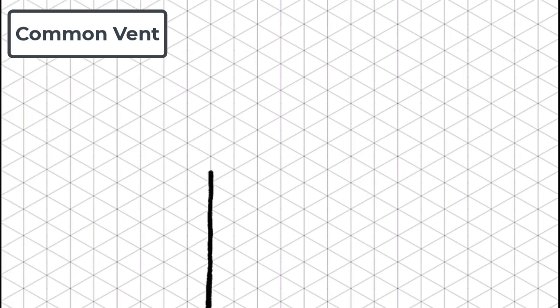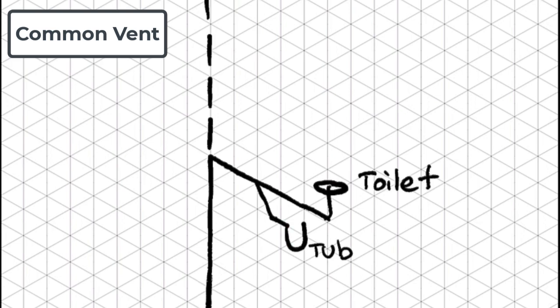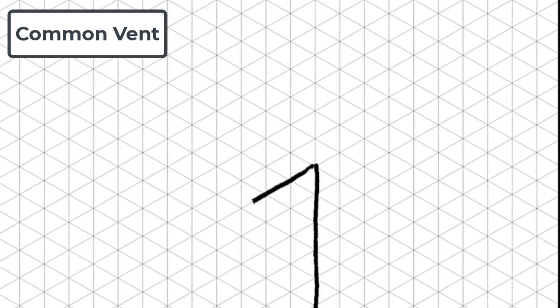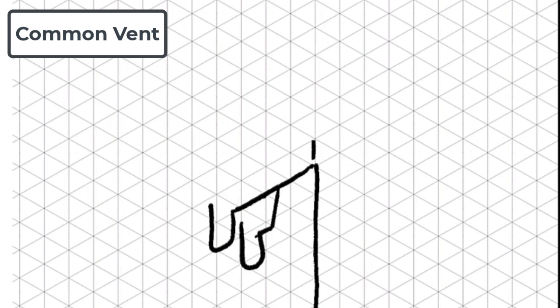And now let's have a look at some violations. This illustration shows two traps branching off of the same trap arm from a vertical stack. This is not work for a common vent. And in this illustration we have another violation: two traps branching off of the same trap arm from a horizontal branch.